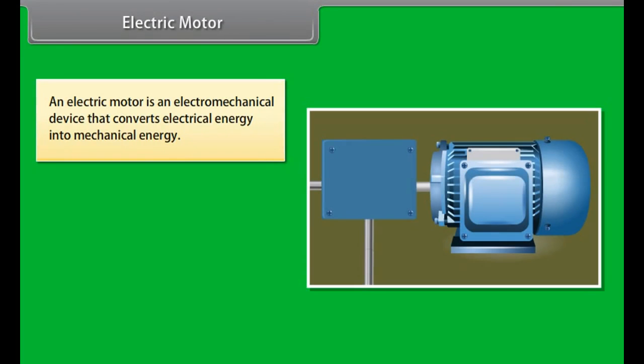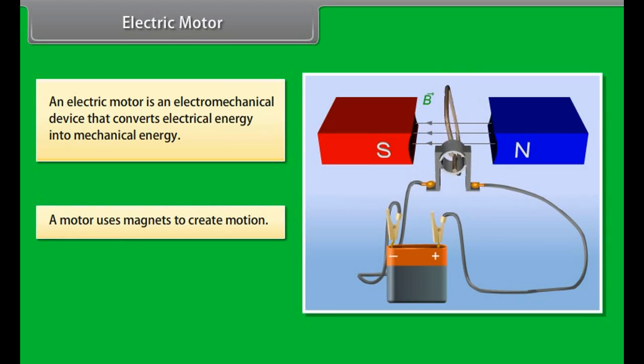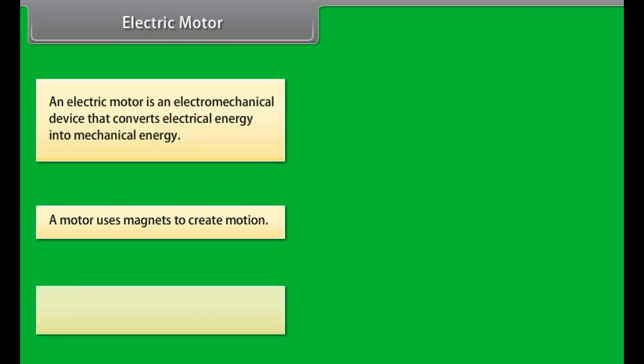Electric motor. An electric motor is an electro-mechanical device. It converts electrical energy into mechanical energy. Let us look at how electric motors work. A motor uses magnets to create motion. Inside an electric motor, the attracting and repelling forces of a magnet create rotational motion.